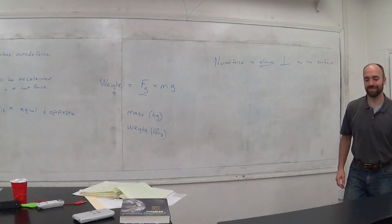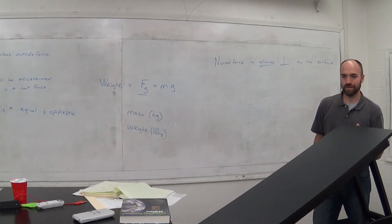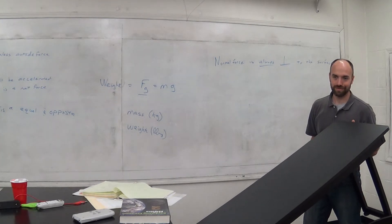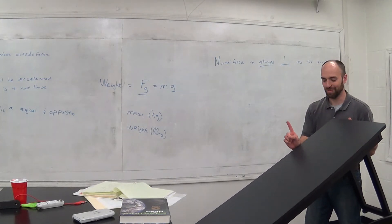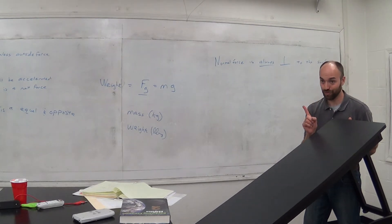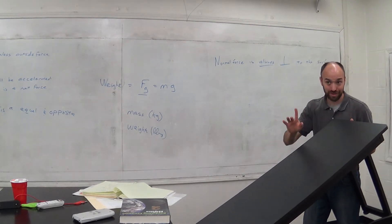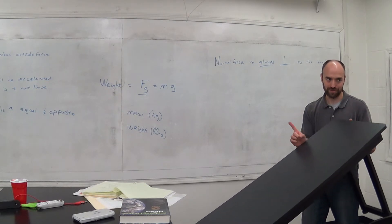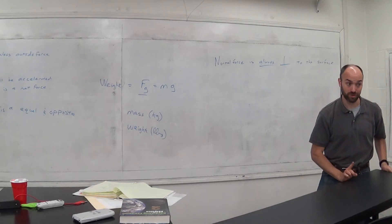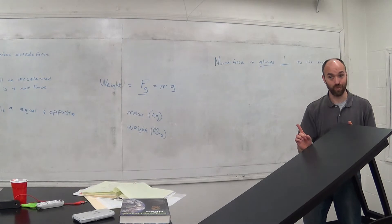At a right angle to the surface. What's perpendicular to this table? It's not straight up, is it? It's 90 degrees up. Here's my point. The normal force not only changes with how much you push on it, it changes with the angle of the surface. It's always perpendicular to the surface, but if the surface isn't flat, it won't be straight up.